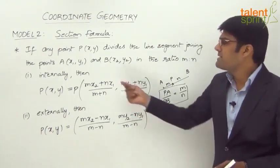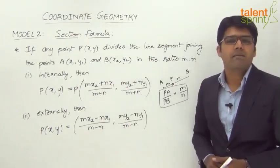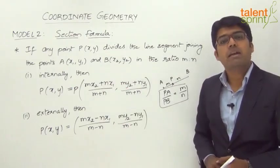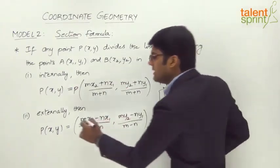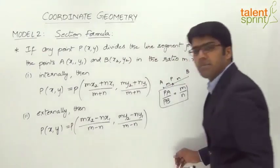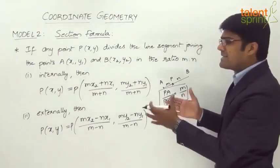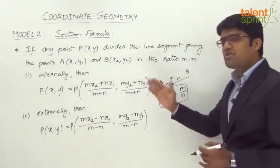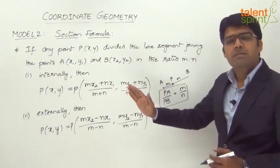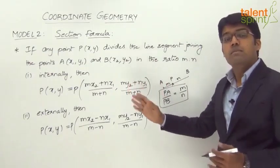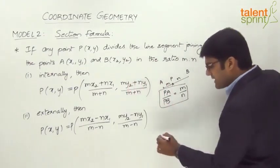So the only difference is that plus becomes minus when it divides in the ratio m is to n externally. So these will be the coordinates of the point P. Now how do you understand this graphically — division of a line segment joining A and B in the ratio m is to n externally? Let us look at it.